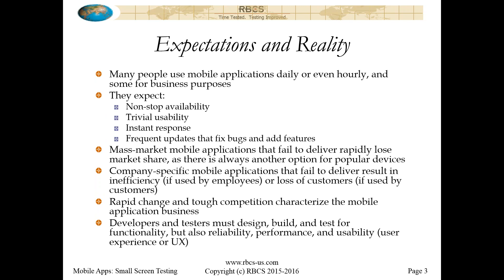There are expectations and there's reality. To the extent that your users' expectations are beyond the reality you can actually provide, you have a quality problem. J.M. Juran's famous definition of quality is fitness for use. Fitness for use is in the eye of the user — the user decides whether something is fit for their use based on comparison of what actually happens against their expectations. Differences between the real user experience and the desired user experience is the gap in quality between where your product is and where your user wants it to be.